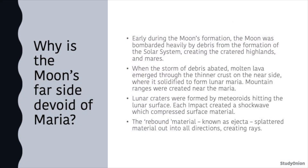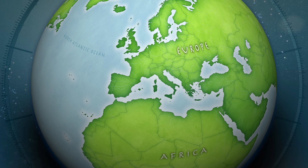Early in the moon's formation, the moon was bombarded by debris creating highlands and mares. When the debris stopped hitting, molten lava crept out of the thinner crust and solidified to form Maria on the near side. Lunar craters were formed by meteorites hitting the lunar surface, and the rebound material, known as ejecta, splattered into all different directions creating rays. Hopefully that helps you learn more about lunar Maria and the surface features present on the moon. See you guys next time!